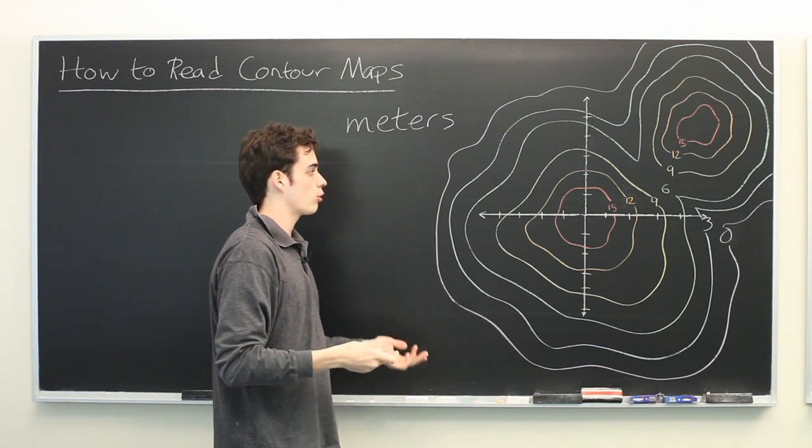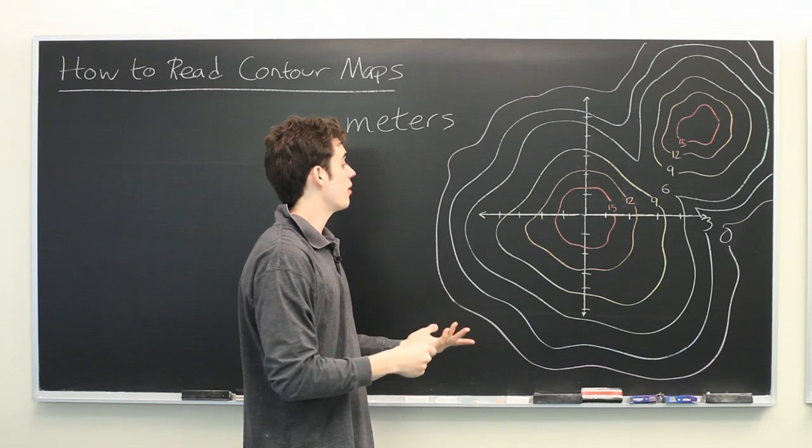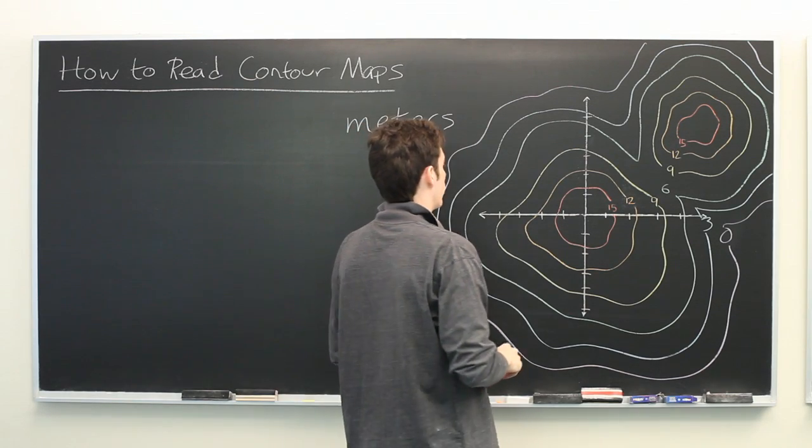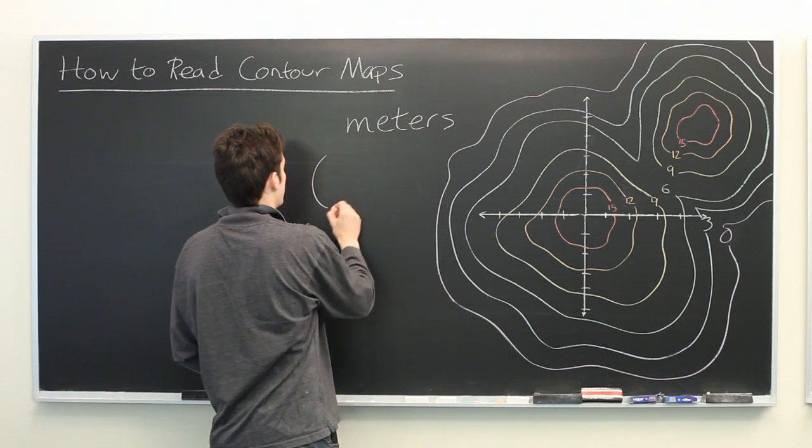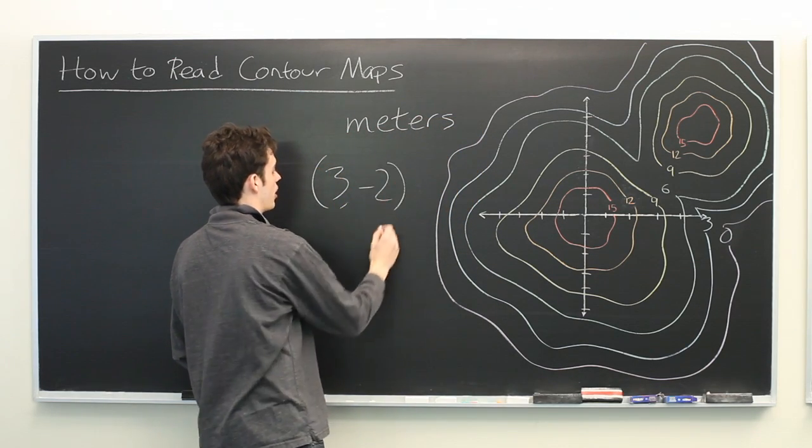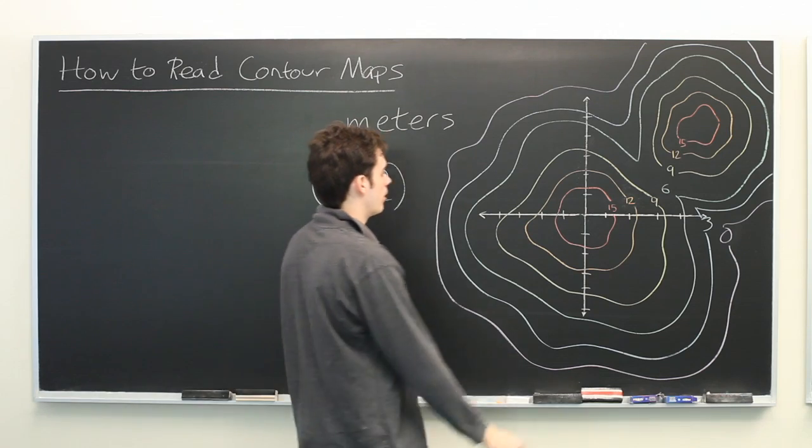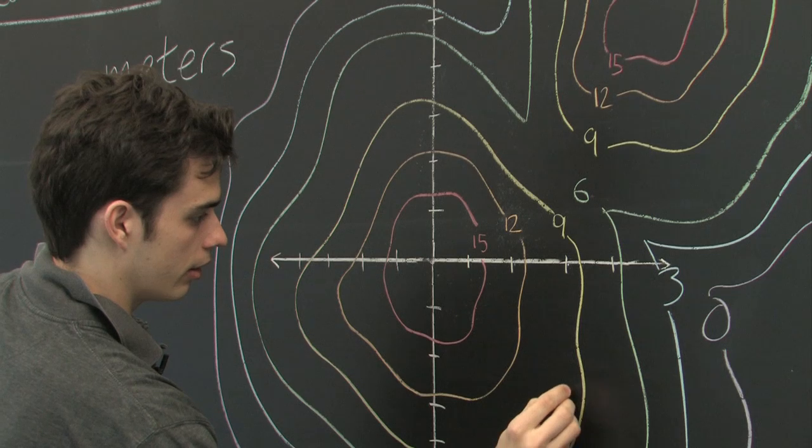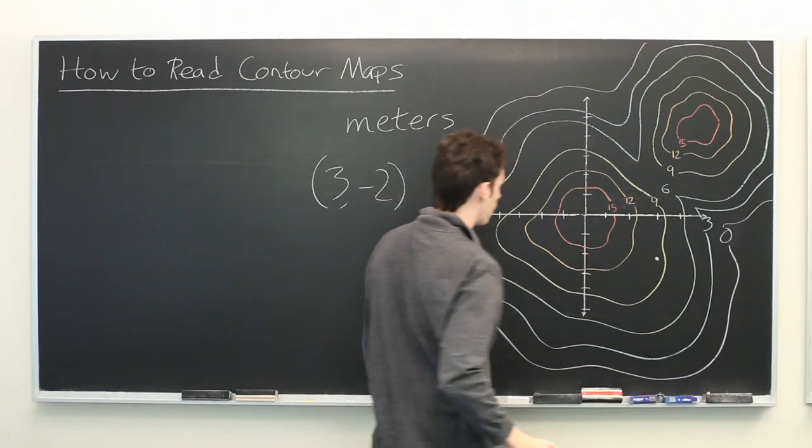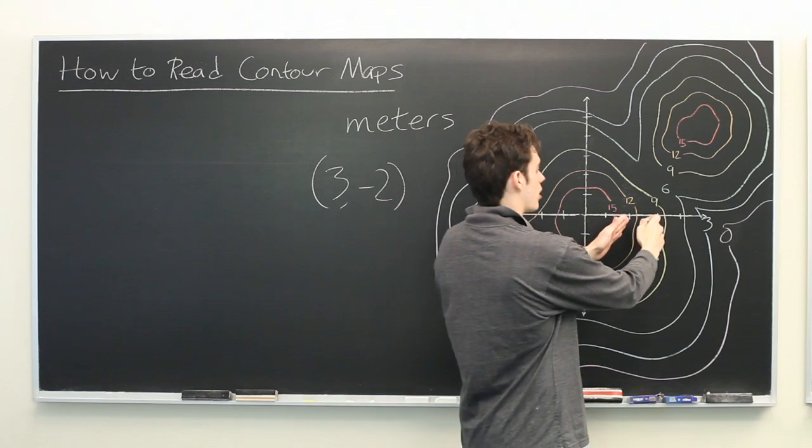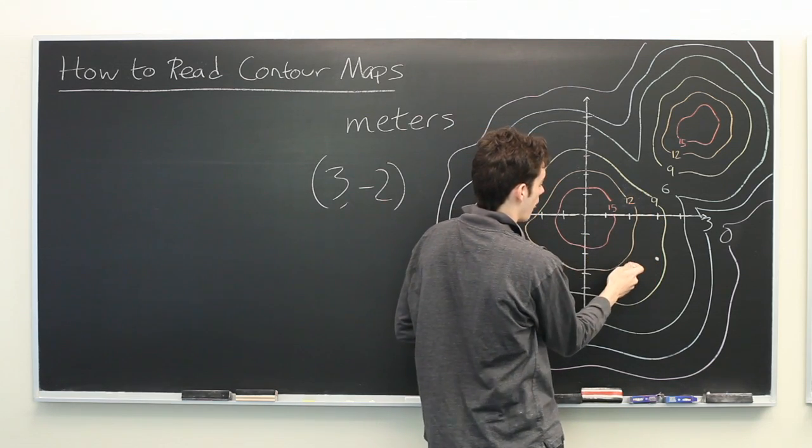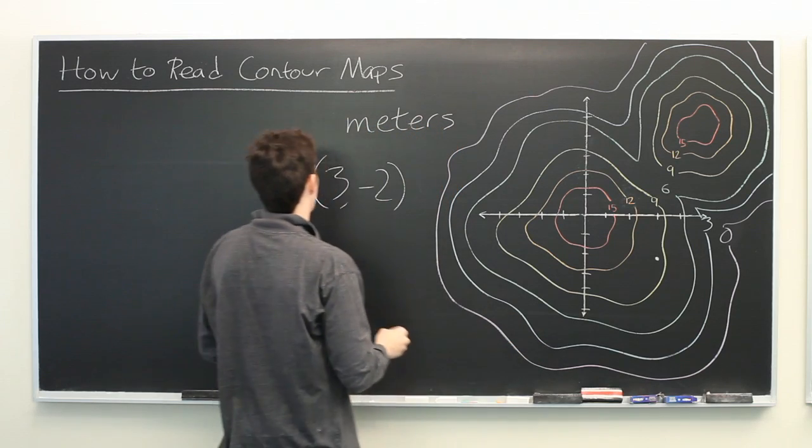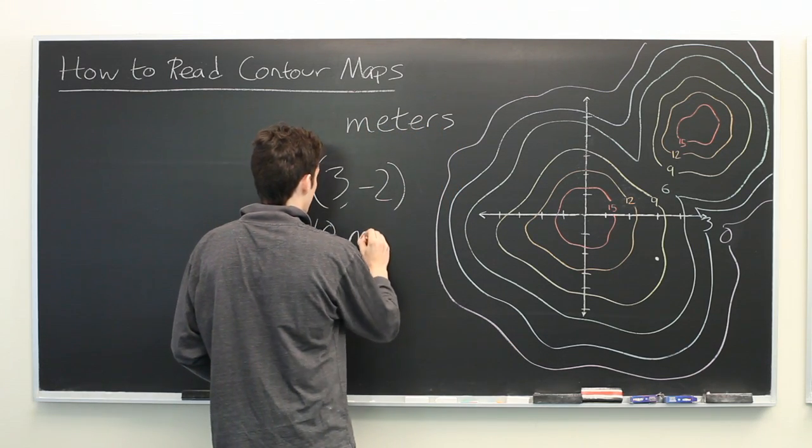When you're looking at a map like this, a natural question might be if you're given a set of coordinates to estimate the height at that point. Let's say that we are told we want to find the height at 3, negative 2, for example. We count to 3, negative 2, that's roughly here. That's in between the contour lines for 12 meters and 9 meters. So it would be a fairly safe estimate to say that the height of the hill is 10 meters at that point.